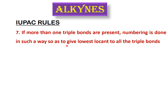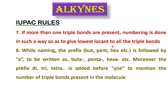Molecules can have more than one triple bond. If so, number the carbon atoms to give the lowest possible positions to all triple bonds. Just as with alkenes, when there is more than one triple bond the prefix changes: but becomes buta, pent becomes penta, hex becomes hexa, hept becomes hepta, and so on. You also add a multiplying prefix before -yne: di for two triple bonds, tri for three, tetra for four.